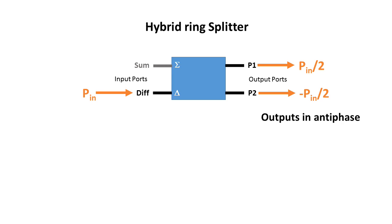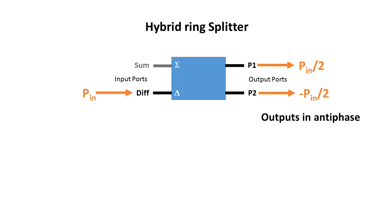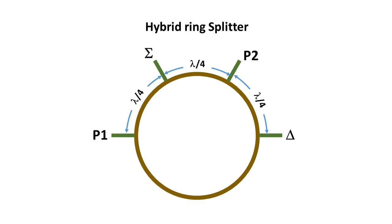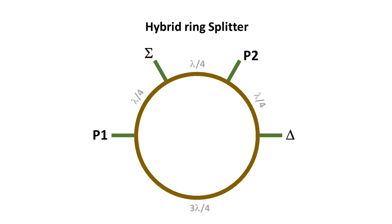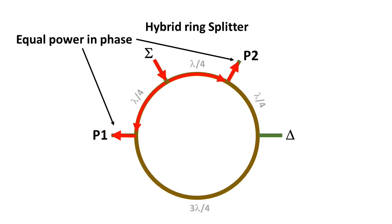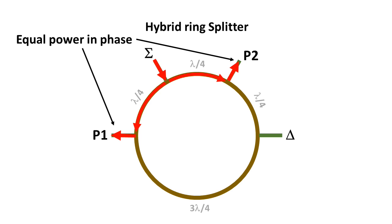A possible implementation is the hybrid ring splitter, also called a rat race. This consists of a circle of feeder — for example coaxial cable — with an overall circumference of one and a half wavelengths. The four ports are connected on the top half of the ring with quarter wavelength feeder sections between them. The distance between the difference port and the P1 output port is three quarters of a wavelength. Power fed into the summing port travels to P1 via a quarter wavelength and also to P2 via the same length, so the outputs are in phase and split equally. The sigma and delta ports are isolated from each other — signals arrive 180 degrees out of phase and cancel, so no power goes out of the delta port.